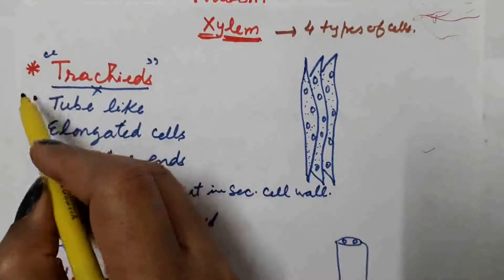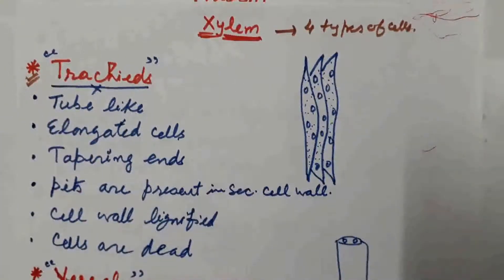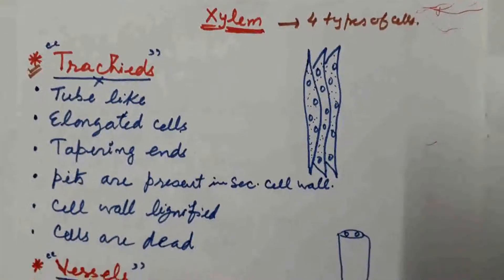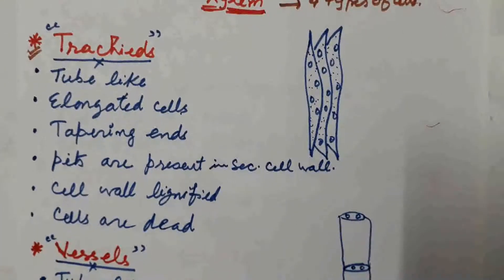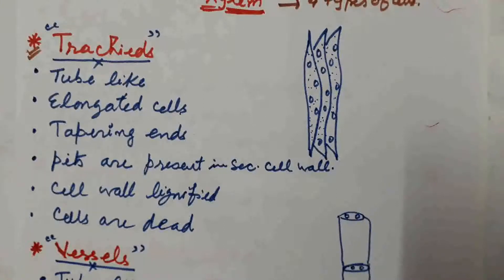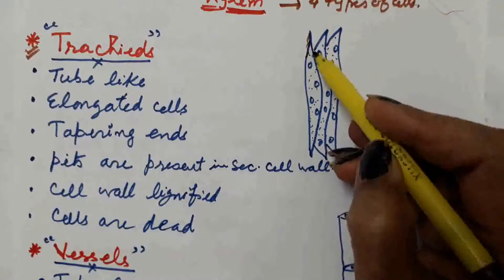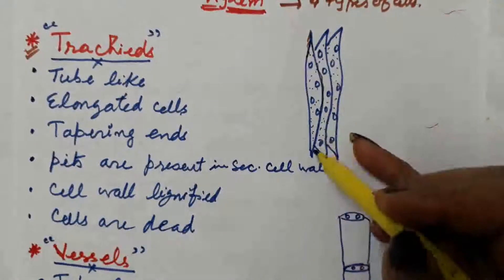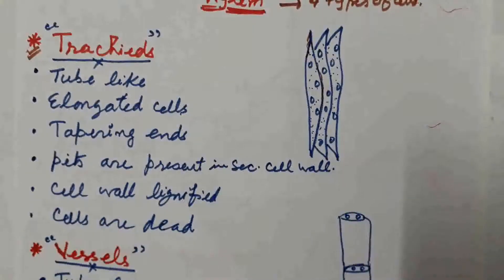The first type of cell in xylem is tracheids. These are tube-like, elongated cells with tapering ends.